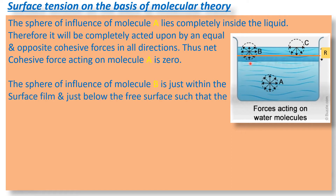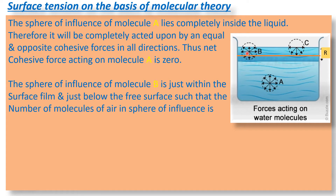Now consider molecule B, which is just below the free surface and within the surface film. Some part of the sphere of influence of molecule B is in air, so there are fewer water molecules in the upper half of its sphere of influence. The cohesive forces in the downward direction are not completely balanced by those in the upward direction. Therefore, there is a net unbalanced downward force which tries to pull molecule B inward into the liquid.